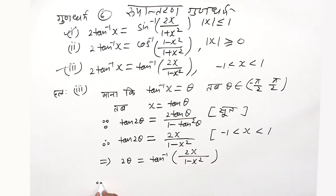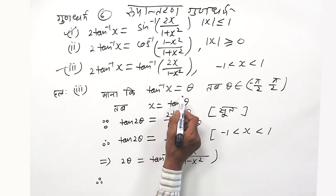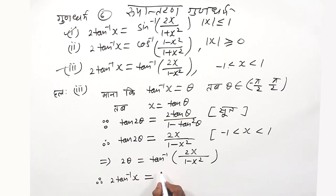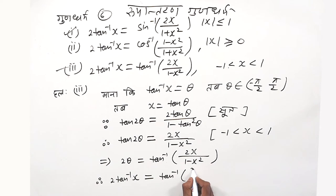Therefore, θ is equal to tan⁻¹x. So 2 tan⁻¹x is equal to tan⁻¹ of 2x upon 1 minus x square. This is how we can see the derivation of the third formula.